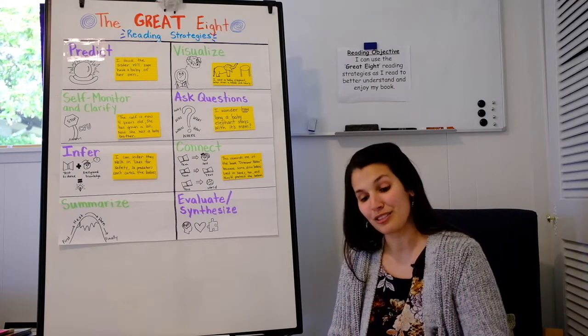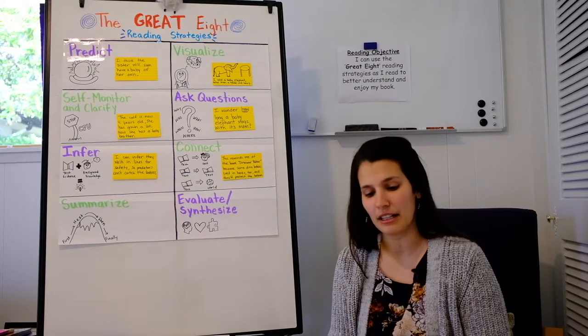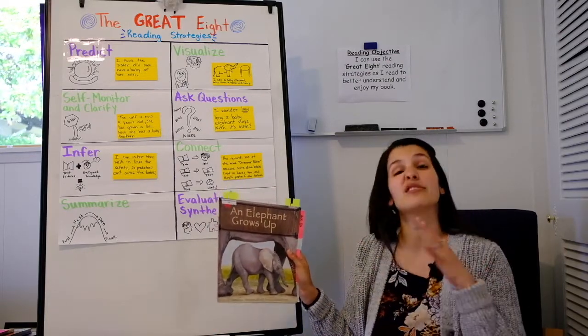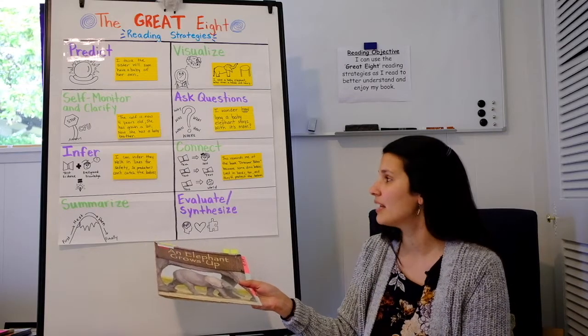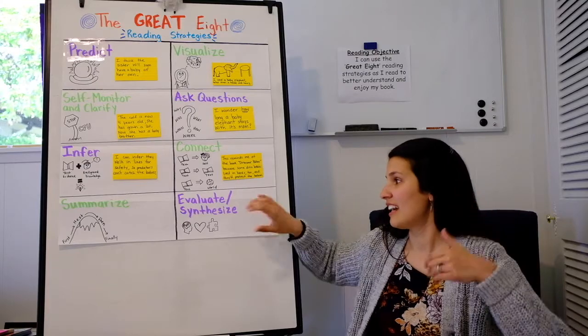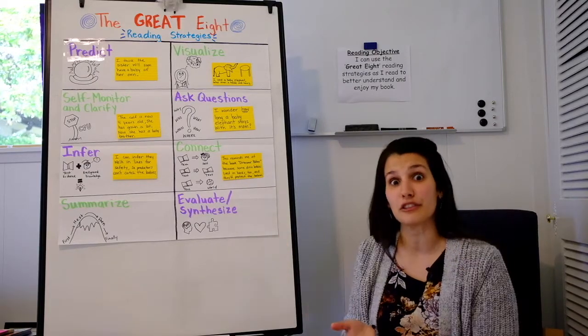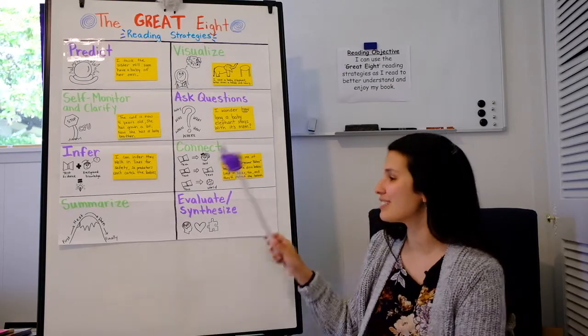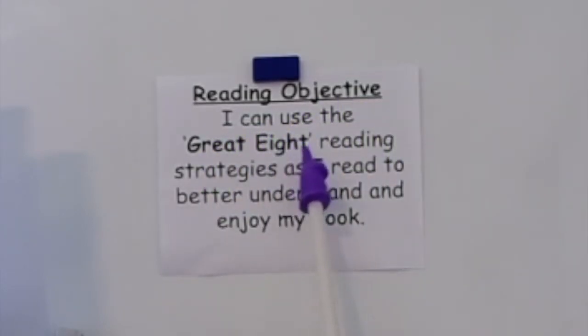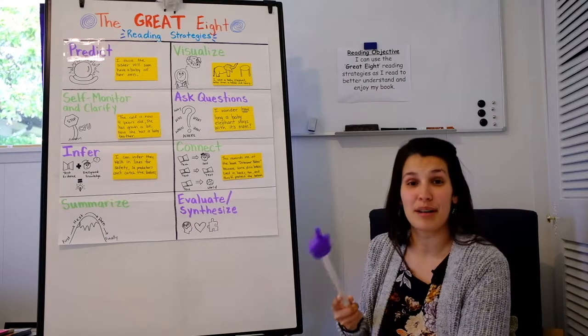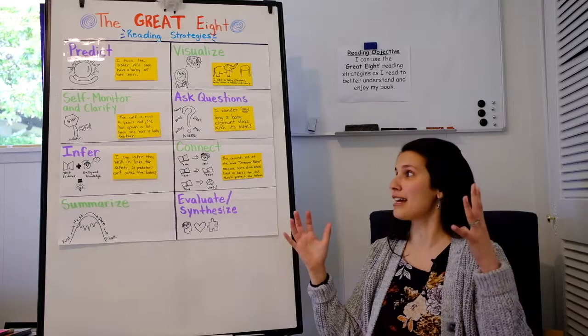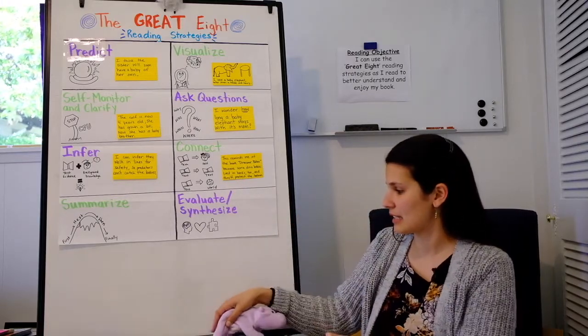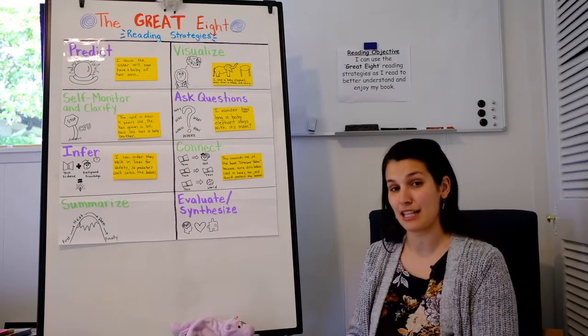So today what we're going to do in order to do these last two strategies really well, I'm gonna try to reread the book to you without stopping. So I'm just going to read the whole thing through and that's going to help us to summarize at the end or tell what the story was all about. It's also going to help us evaluate to think if we liked it or not and to synthesize, kind of get a whole big picture out of it thinking about what we learned. We are going to read our objective to get started.